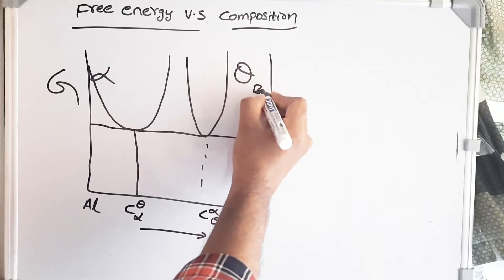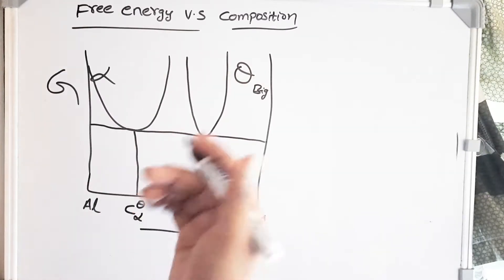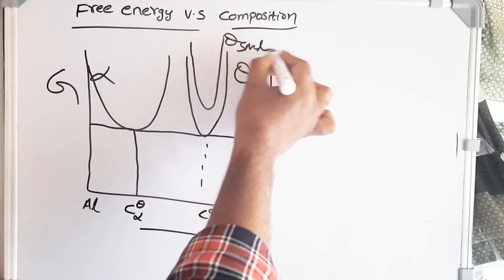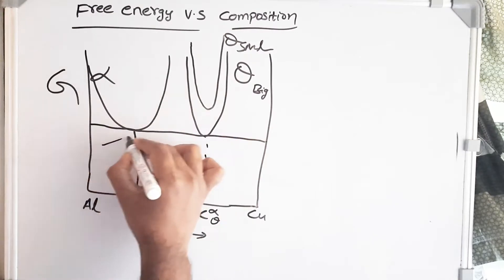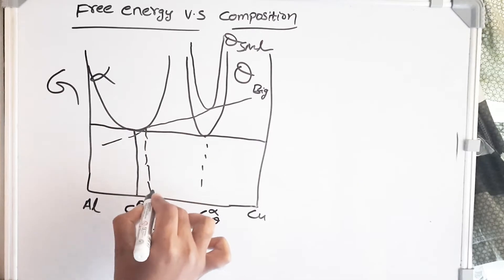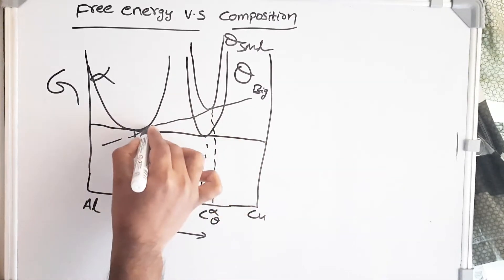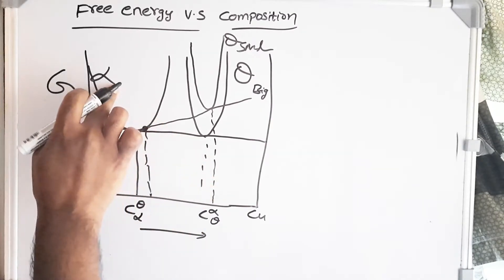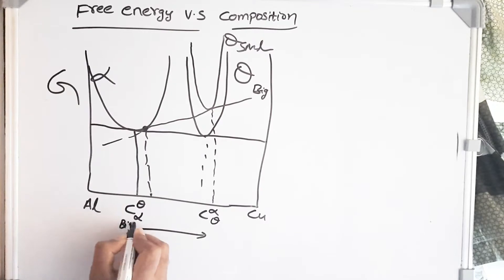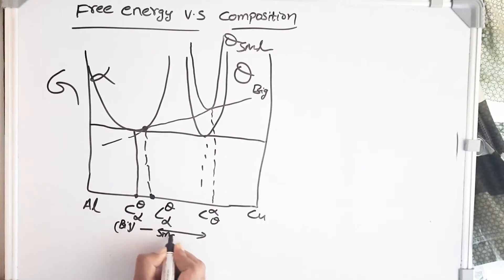Consider this curve is for theta big particle. Since the smaller precipitate has more free energy than the bigger precipitate, for the smaller precipitate we get a higher curve — this is for theta smaller. If you draw the common tangent between the alpha free energy curve and theta smaller, alpha free energy doesn't change because alpha is the matrix; the size effect only comes into picture for the precipitate. This gives another point where alpha is in equilibrium with theta smaller, and this composition is for alpha in equilibrium with the smaller precipitate.